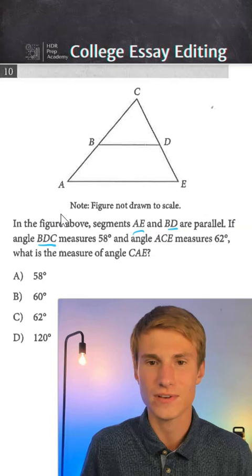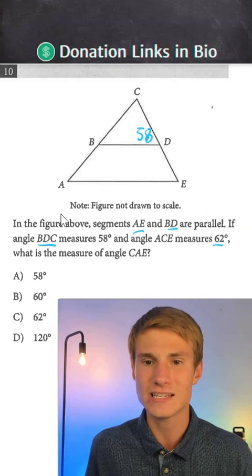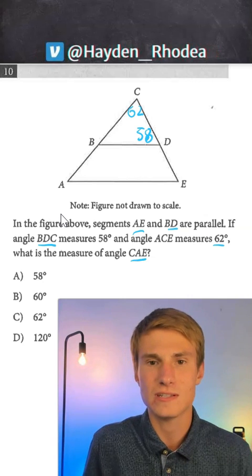If angle BDC measures 58 degrees, so I'm going to go ahead and mark that down on my triangle, BDC is 58. And angle ACE measures 62 degrees, what is the measure of angle CAE?